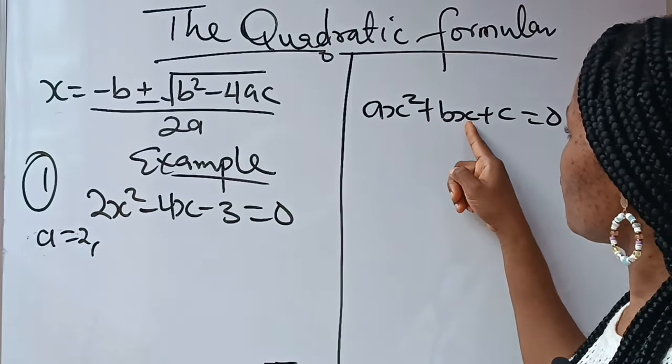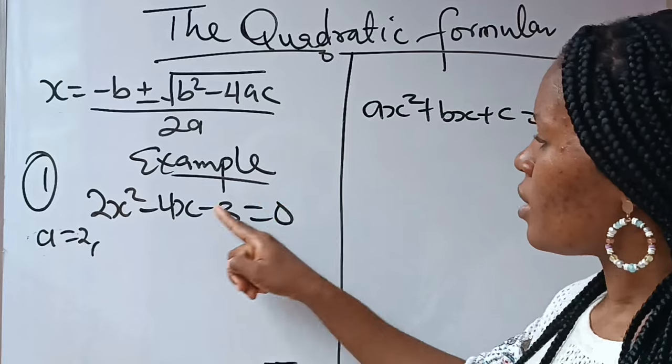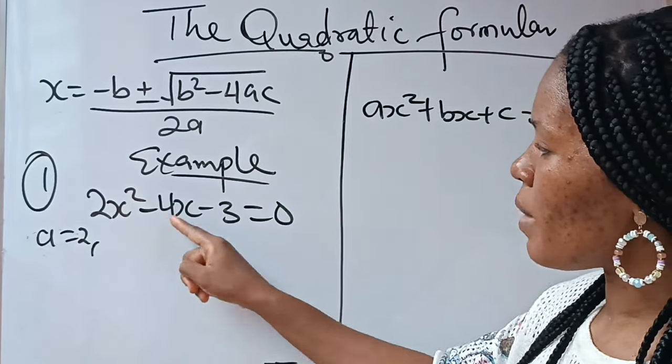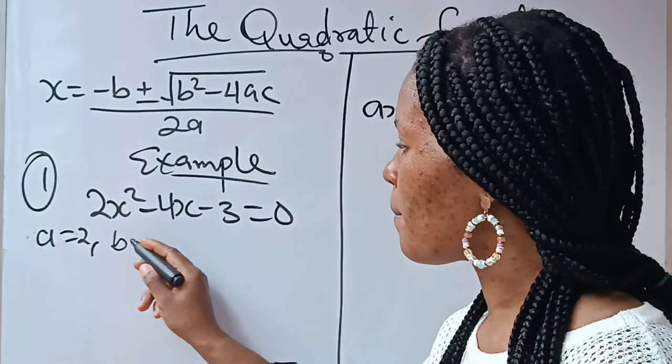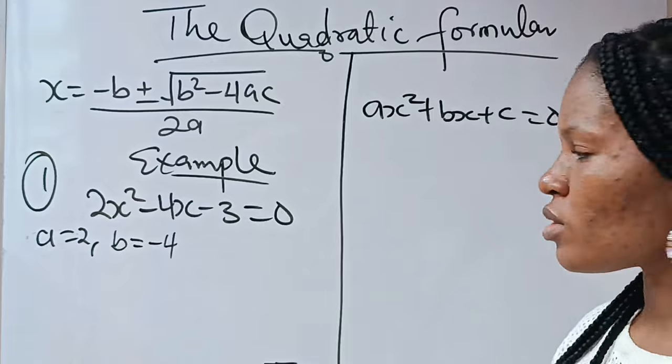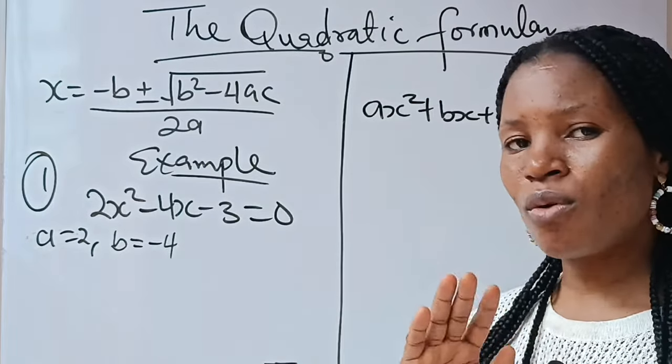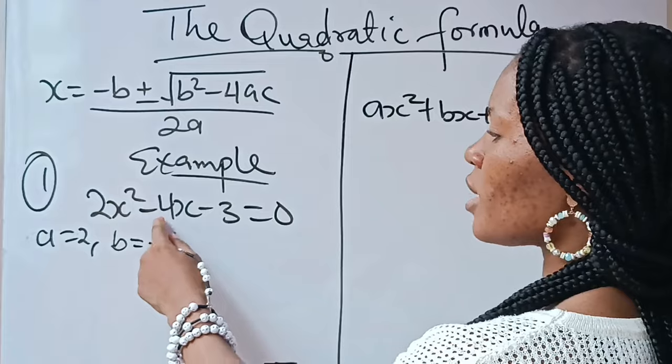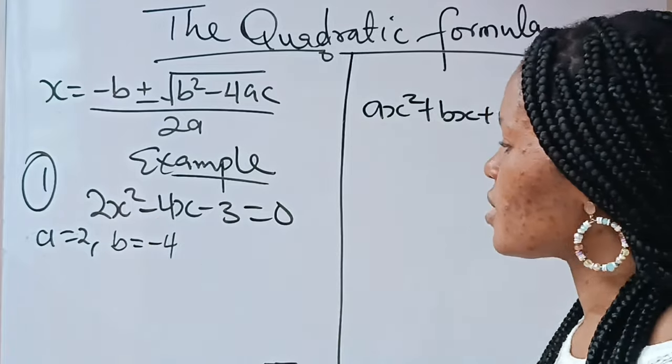Now, if you notice that coefficient of your x is your B. Now, coefficient of your x is -4. So, it means that our B = -4. Take note, -4 and not 4. You pick your number together with any sign that is in front of it.